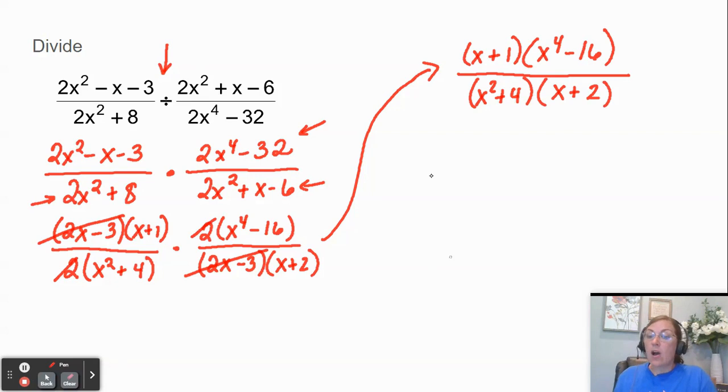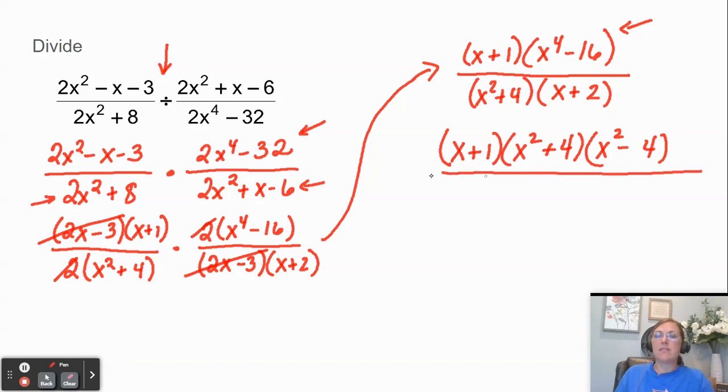Okay now I can go further on this parentheses because that's a difference of two squares. So I'm going to factor one step further. So the square root of x⁴ is x². So I'll put that there and there. The square root of 16 is 4 and one gets a plus and one gets a minus. Okay so now we still have our same denominator. Nothing more I can factor there with.